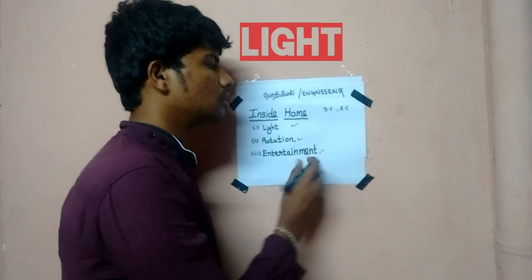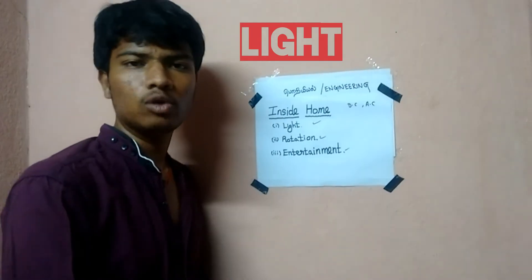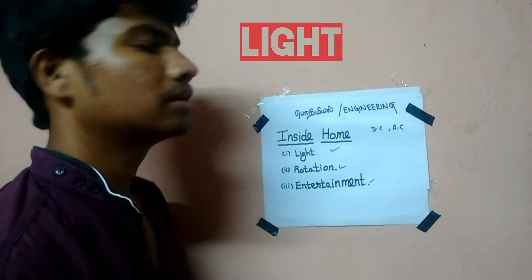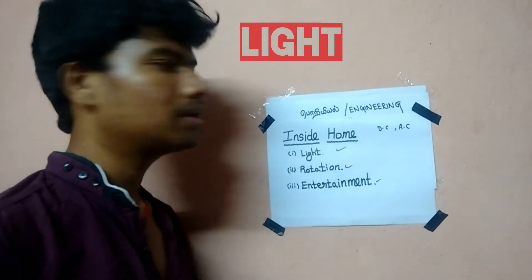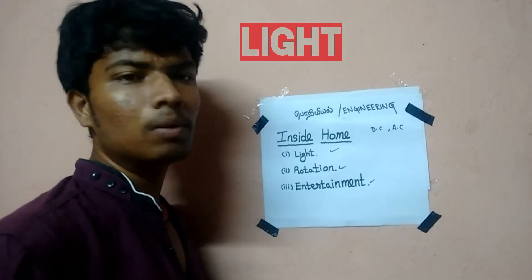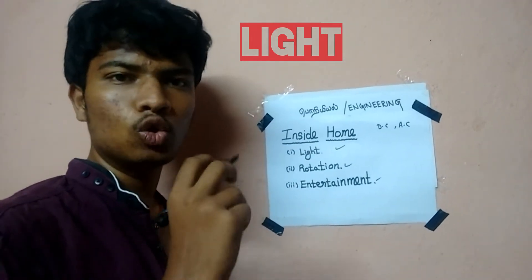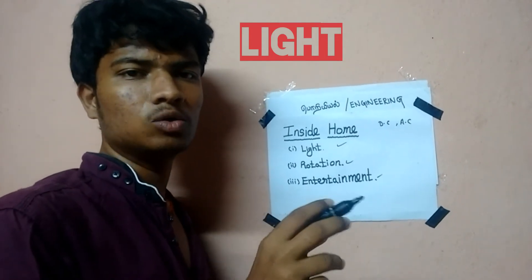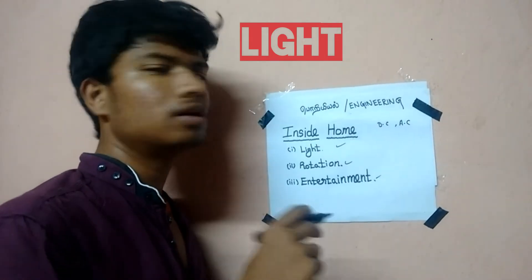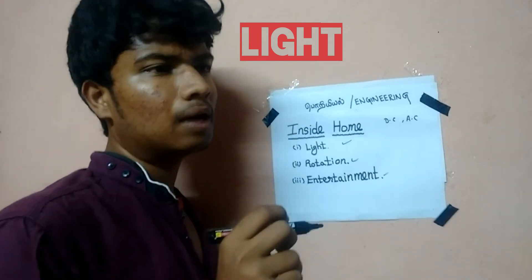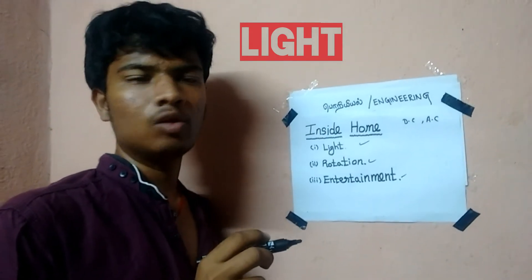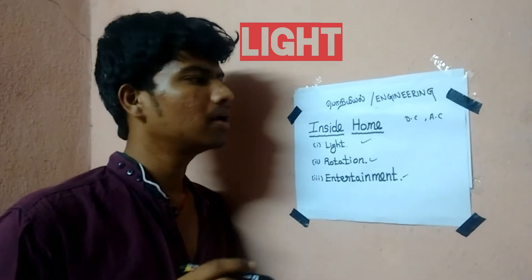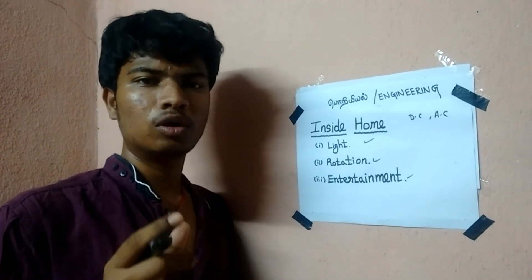The anode and the fluorescent bulb is in DC current. This is why we have a tube plate, and the tube plate is in DC current. So the fluorescent bulb is in DC, and the LED bulb is in DC. When we have a bulb or CFL, we have a green board.